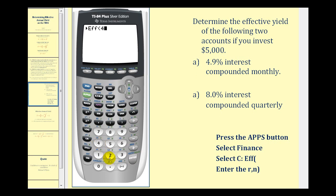Now we're going to type in the actual percent as a percentage, not as a decimal. So we'll type in 4.9, comma, and then N, which is the number of compounds per year. Since it's monthly and there's 12 months in one year, N is 12. Press enter, and our effective annual yield will be approximately 5.01%.